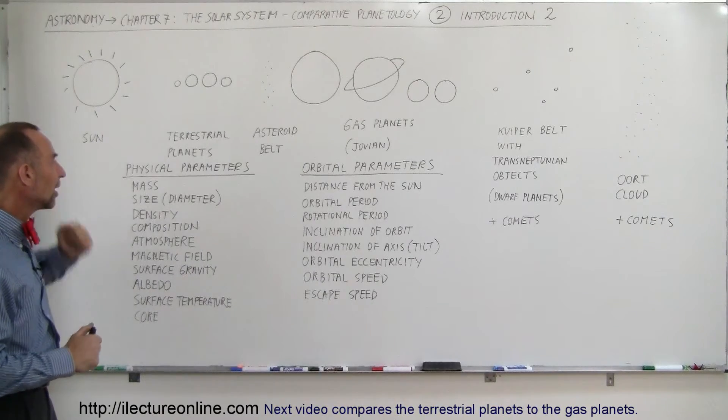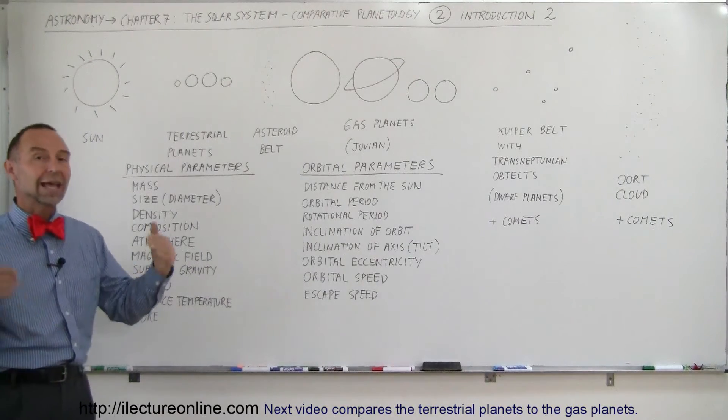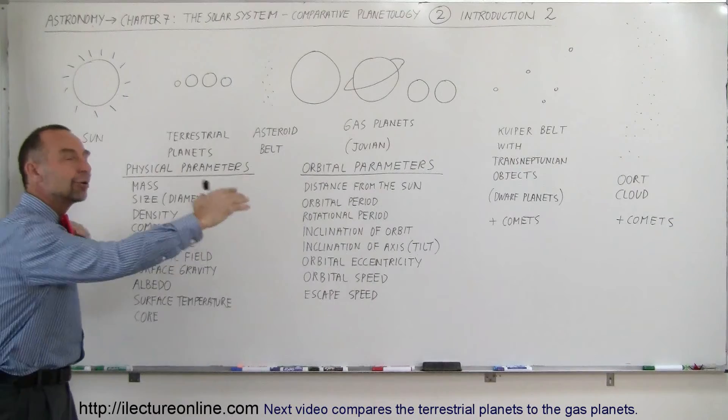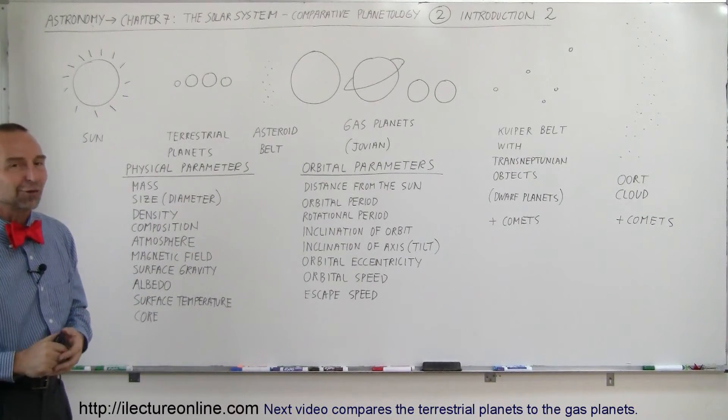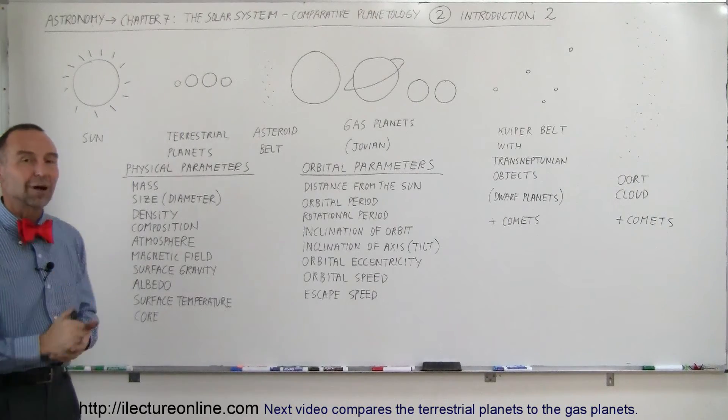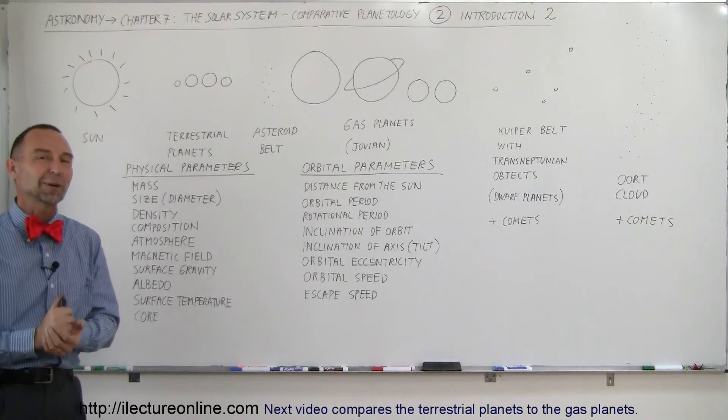So let's start out by looking at these parameters and we're going to do that by comparing all the planets to each other in each of these categories and we'll see some amazing things about our solar system when we do that. So onward and see what our solar system is all about.